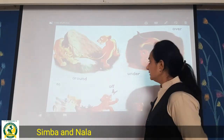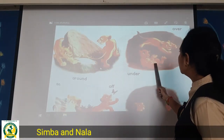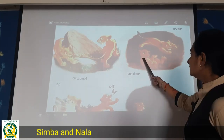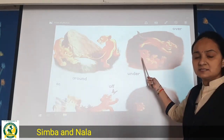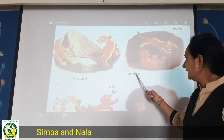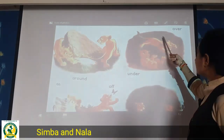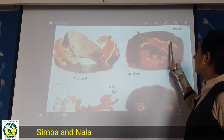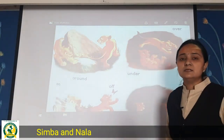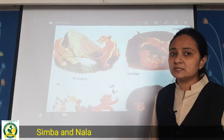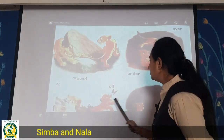Then you can see under and over. Nala is under, meaning she is below, and Simba is jumping over Nala — Simba is jumping over Nala.